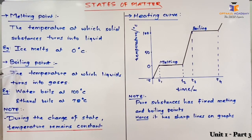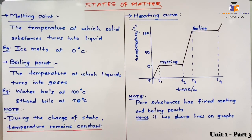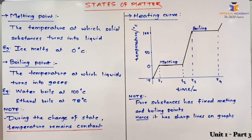When the entire ice turns into liquid, its energy starts increasing again as heat is continuously provided, and at a certain temperature water starts boiling. What is boiling point? It is the temperature at which liquid turns into a gaseous state. Water boils at 100 degrees Celsius, and ethanol boils at around 78 degrees Celsius.